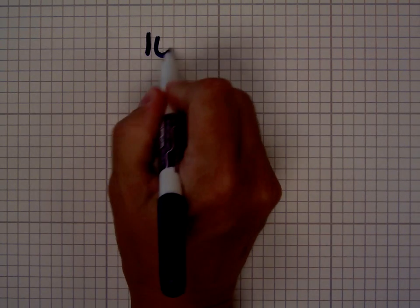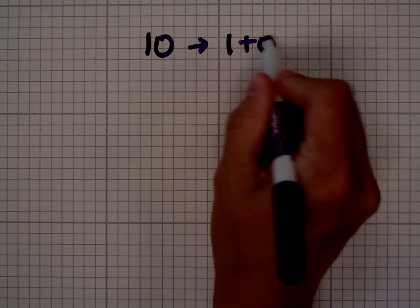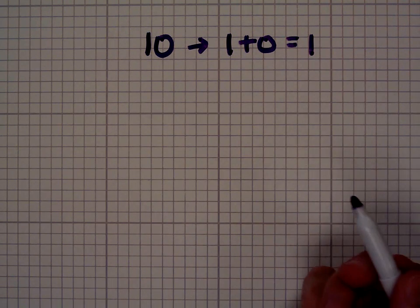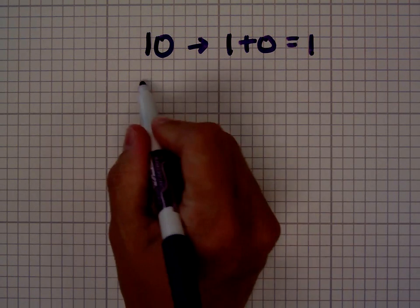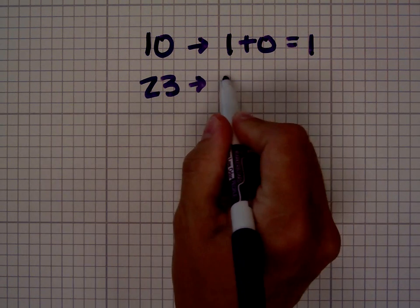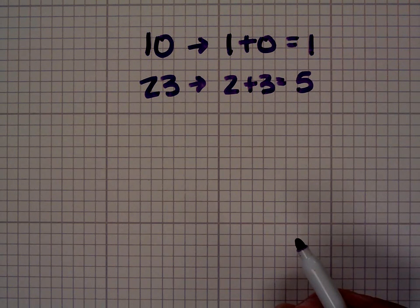What do I mean by that? Well, let's say we're trying to find the digital root of 10. The digits in 10 are 1 and 0, so we add those together and we get 1. So the digital root of 10 is 1. What would be the digital root of 23? Simple, it's 2 plus 3, so the digital root of 23 is 5.